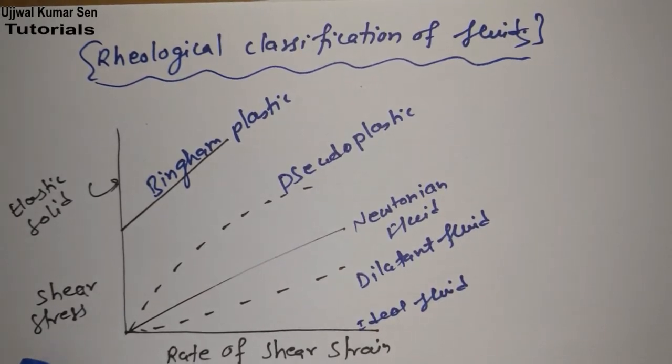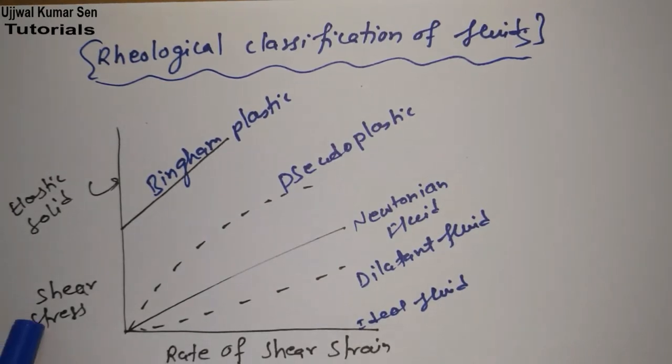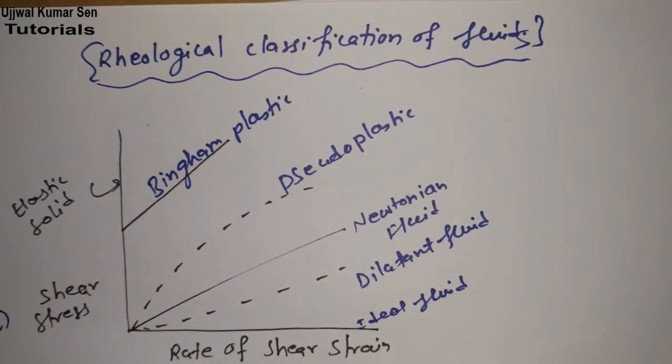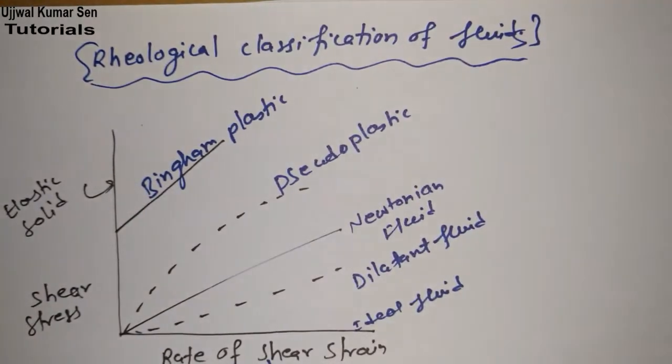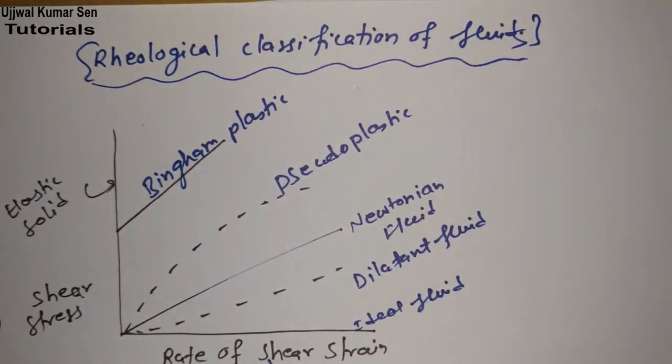One is shear stress and the other is rate of shear strain. Rate of shear stress means what? du upon dy. And here, what is tau? du upon dy. So basically, what is rheological classification?